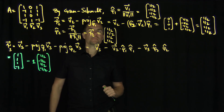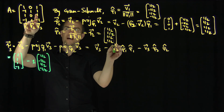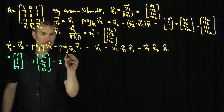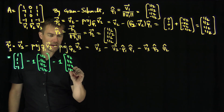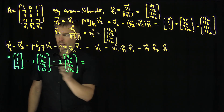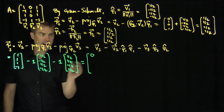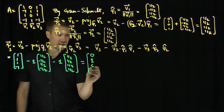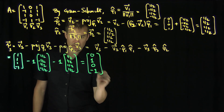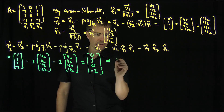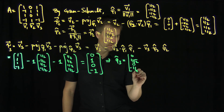Then φ̂₂ · V3 = 1/2 + 1/2 + 1/2 - 1/2 = 1, so we also subtract 1 copy of φ̂₂ = [1/2, 1/2, 1/2, 1/2]. Computing entry by entry: 1 - 1/2 - 1/2 = 0; 1 + 1/2 - 1/2 = 1; 1 - 1/2 - 1/2 = 0; -1 + 1/2 - 1/2 = -1. So ψ₃ = [0, 1, 0, -1], and normalizing gives φ̂₃ = [0, 1/√2, 0, -1/√2].